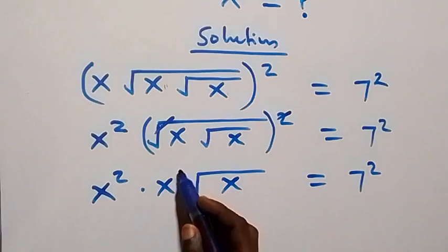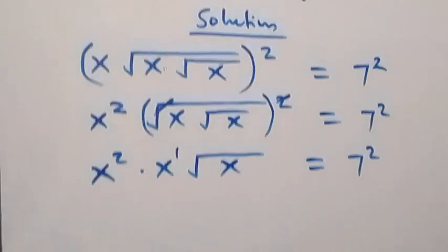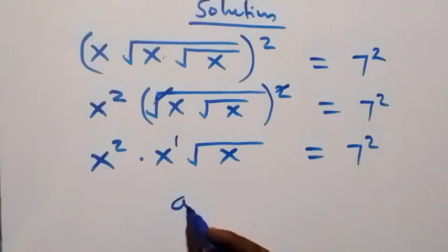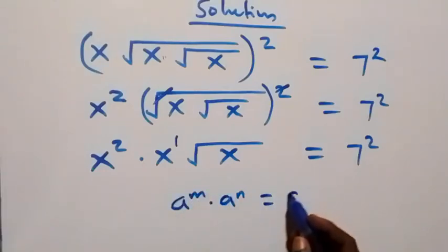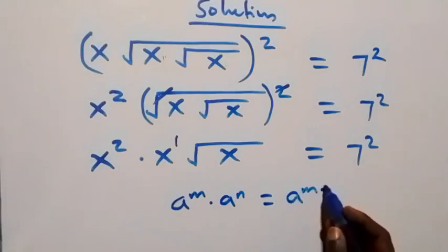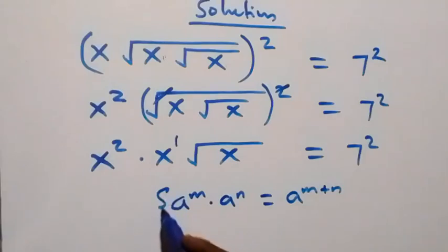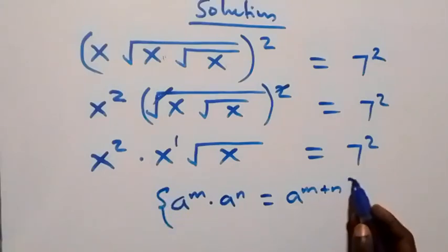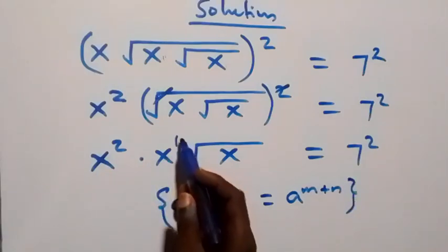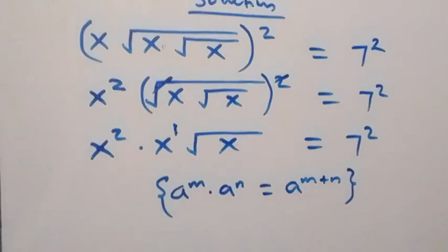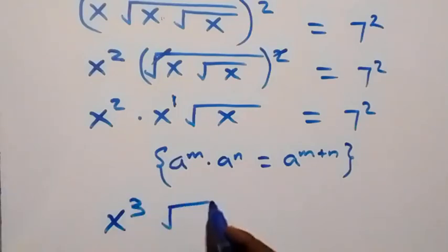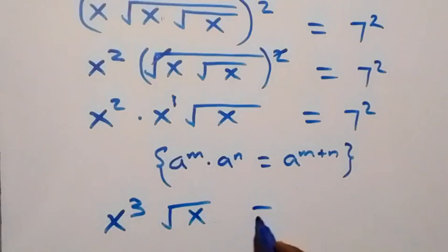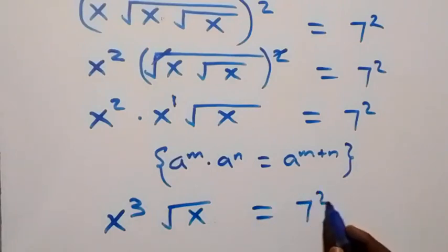Then here we have x raised to power one. From the law: a raised to power n times a raised to power n equals a raised to power n plus n. Here we can add the powers, that is two plus one, and that gives us x raised to power three times root x equals to seven squared.